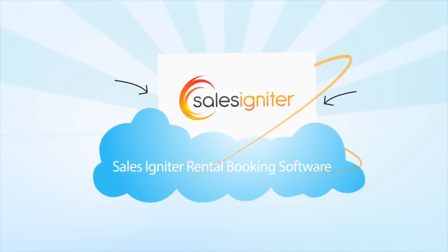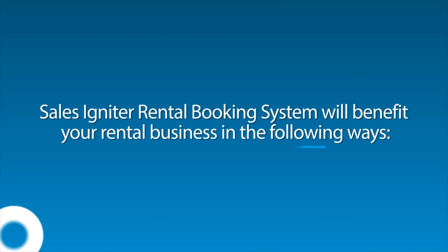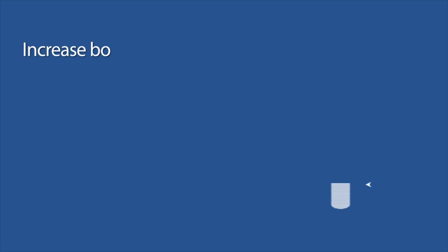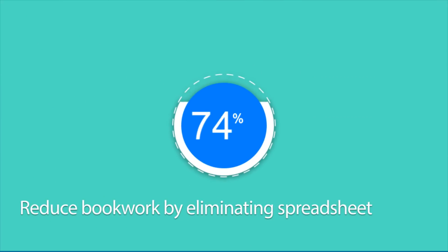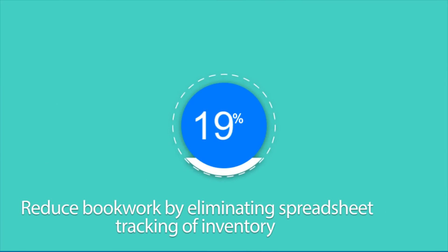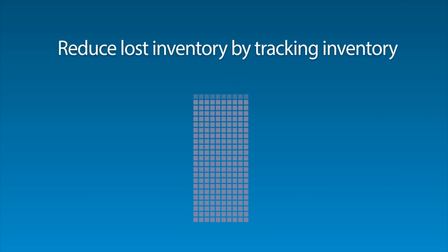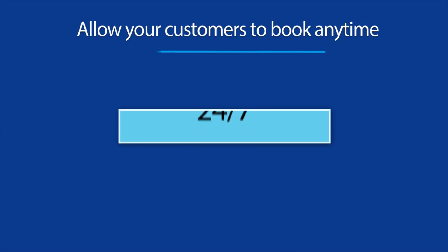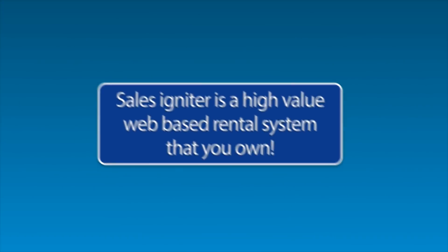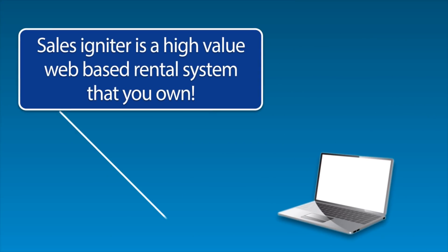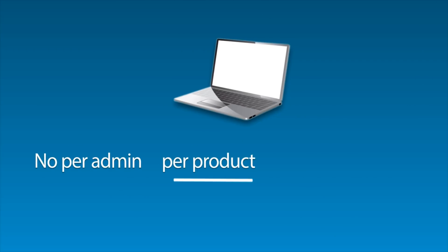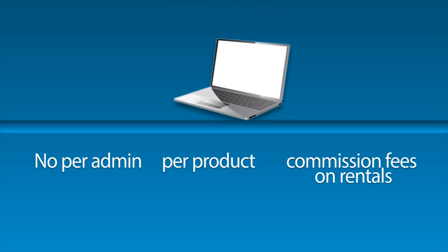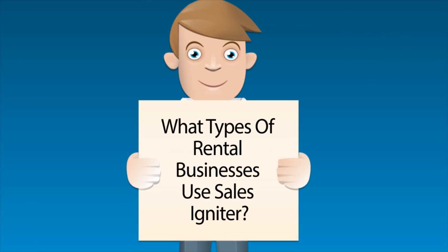Sales Igniter Rental Booking Software will benefit your rental business in the following ways: increase bookings via online marketing, reduce bookwork by eliminating spreadsheet tracking of inventory, reduce lost inventory by tracking inventory via barcodes or RFID tags, allow your customers to book anytime 24/7 using your website. Sales Igniter is a high-value web-based rental system that you own — no per-admin, per-product, or commission fees on rentals.